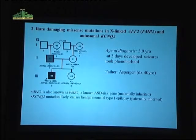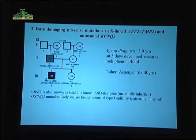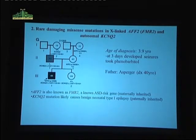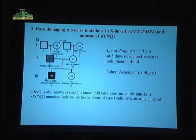This is a second family, with a rare missense mutation identified in the X-linked gene AFF2, which is called FMR2, and also a second gene, an autosomal potassium channel gene, KCNQ2. Here's the three-generation pedigree. The KCNQ2 mutation is inherited. The mother and grandmother do not have a phenotype. The father has Asperger's syndrome and carries KCNQ2, and the index case also has this mutation.